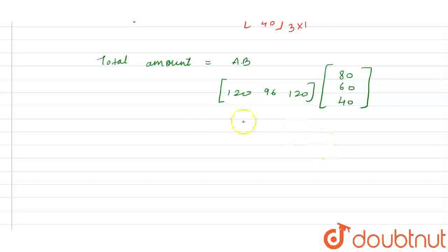Now, if we need to multiply, how we multiply the matrices? This is first row, first column. So 120 into 80 plus 96 into 60 plus 120 into 40. We take first row of the first matrix and first column of the second matrix to multiply these elements.